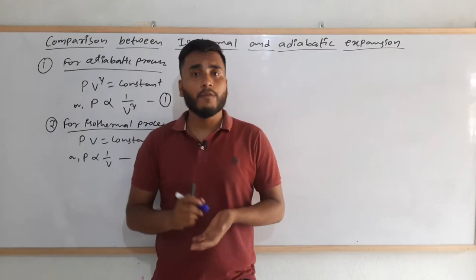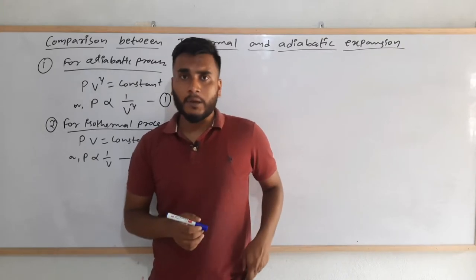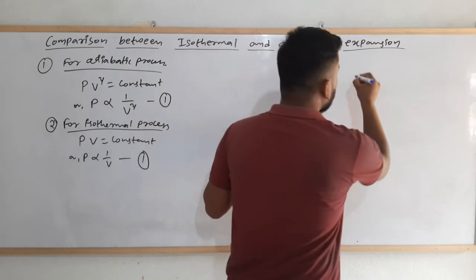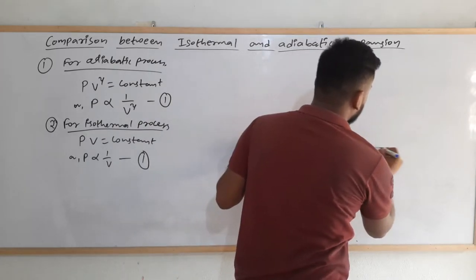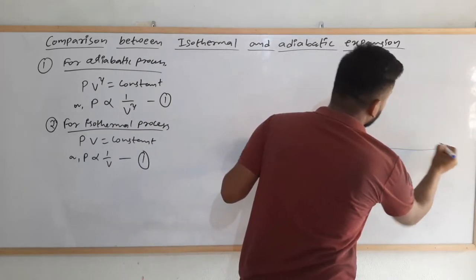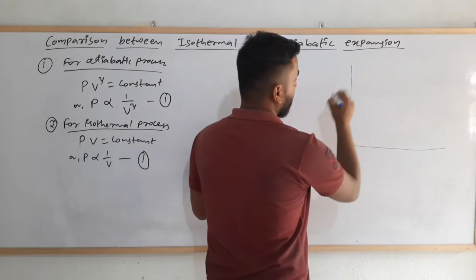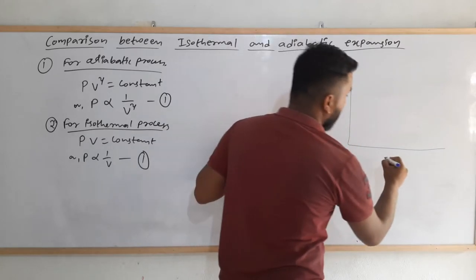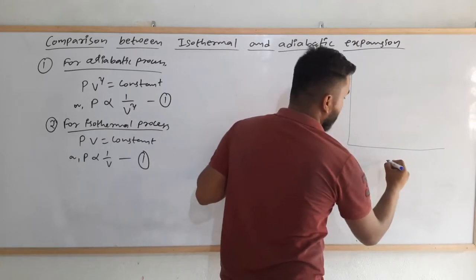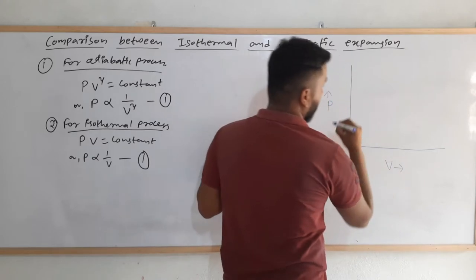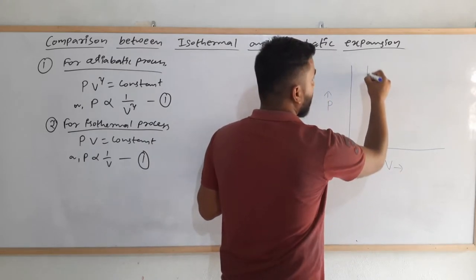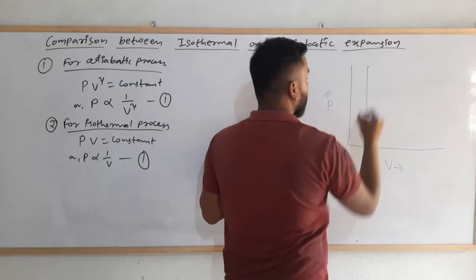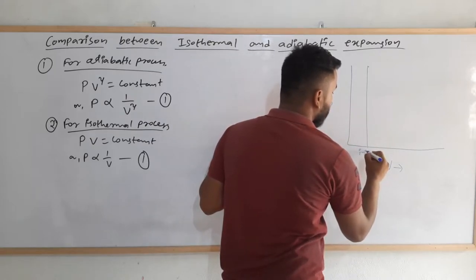Now let me draw a pressure-volume graph for both of them. The pressure-volume graph for isothermal and adiabatic processes has pressure on the y-axis and volume on the x-axis. This point represents the initial condition.